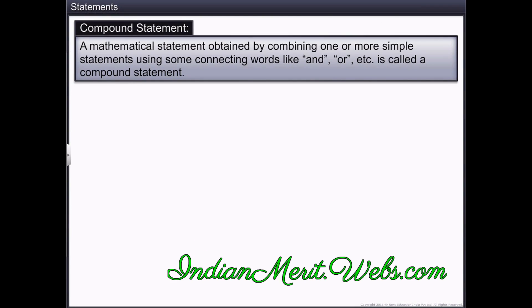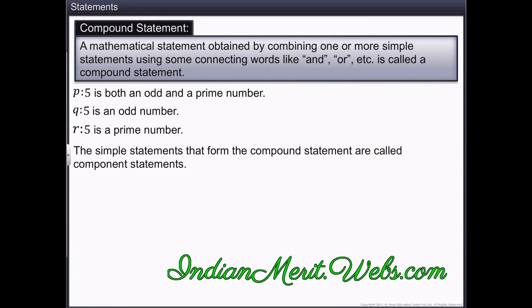Generally, we use the words, and, or, and so on to connect simple statements. Let's consider the statement, 5 is both an odd and a prime number. This statement tells us that 5 is an odd number, and 5 is a prime number, and that they are connected with the word, and. The simple statements that form the compound statement are called component statements.